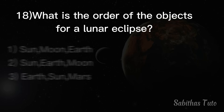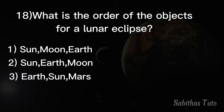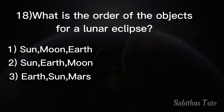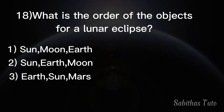Eighteenth question. What is the order of the objects for a lunar eclipse? The answer is sun, earth, moon.